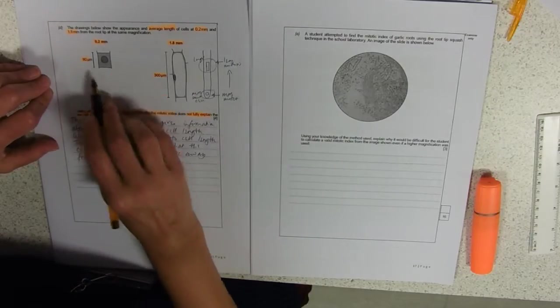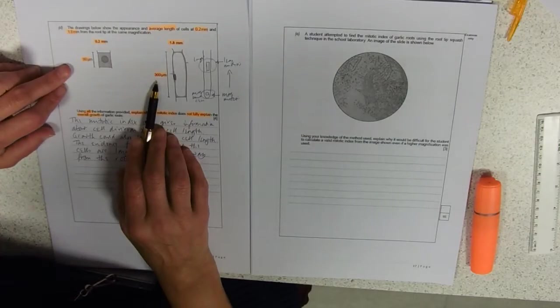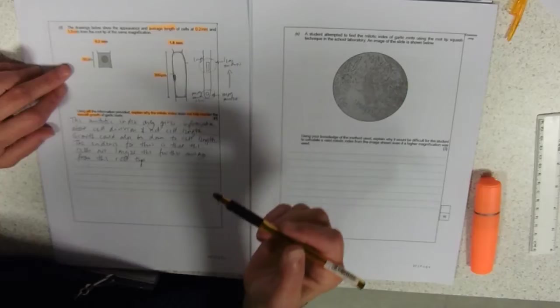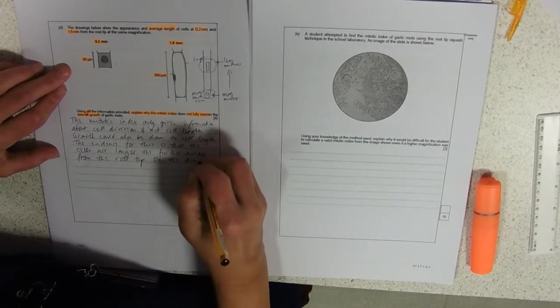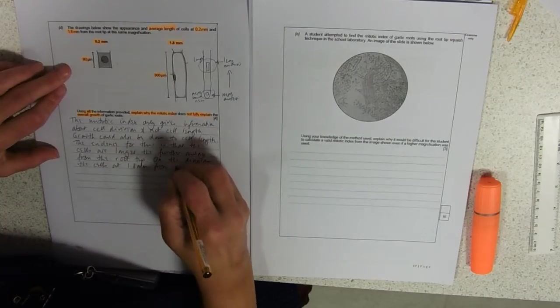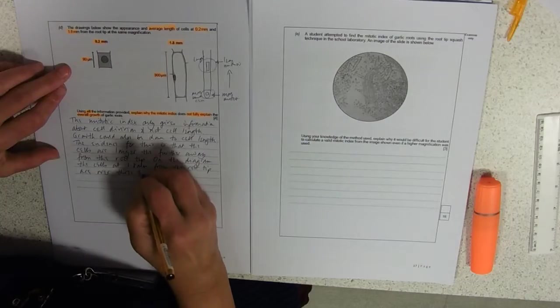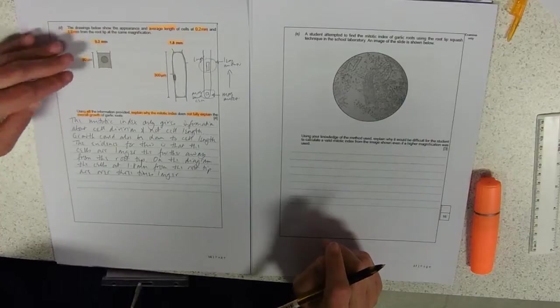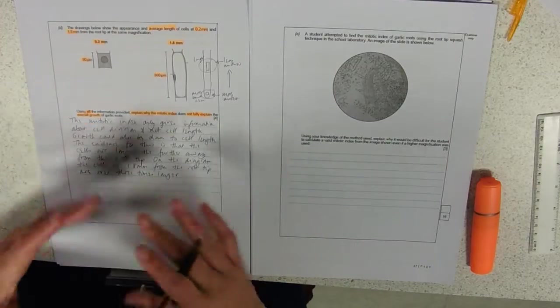So, what's our evidence then? Because we have to use all the information, which means we need to use the diagram as well. So, the evidence for this is that the cells are longer the further away from the root tip you are. And they've actually told me how long these cells are and just in my head I'm thinking, well, that's like three times longer. Just over three times longer. And if you've got sizes and data and they're saying use the information and you've got something numerical, why wouldn't you actually tell them that you have used that data? So, on the diagram, the cells at 1.8 millimeters from the root tip are over three times longer. And sometimes you get data marks just for actually stating it.